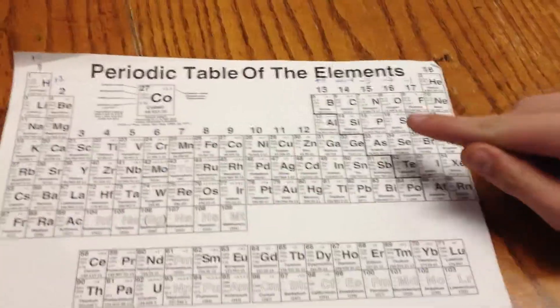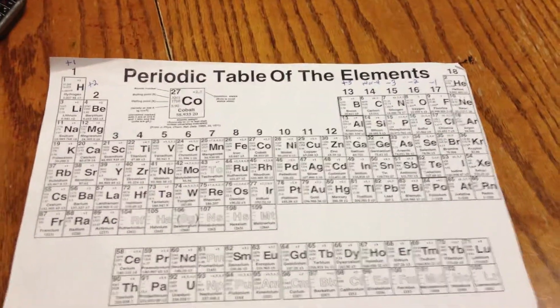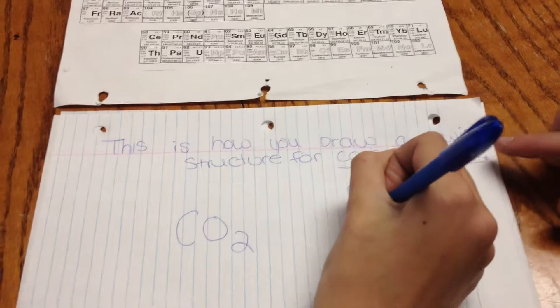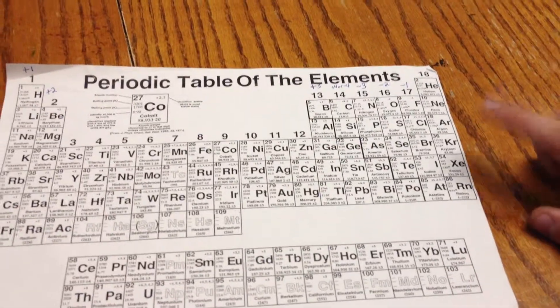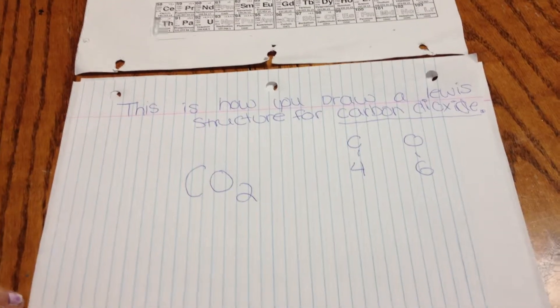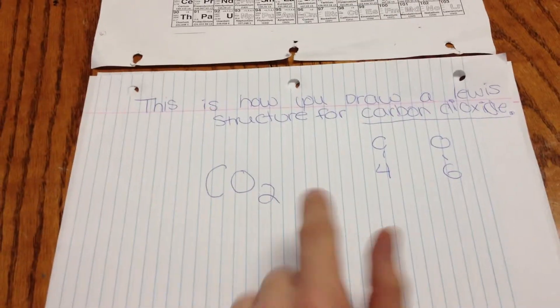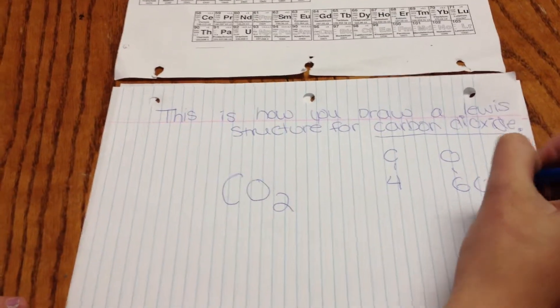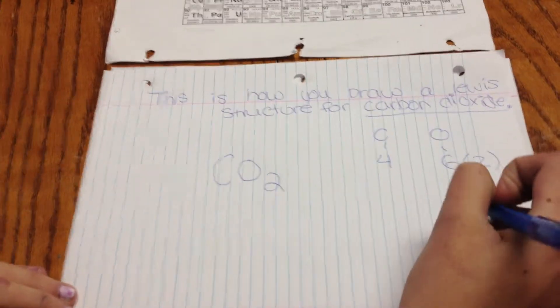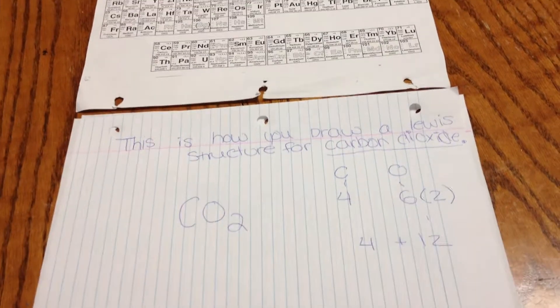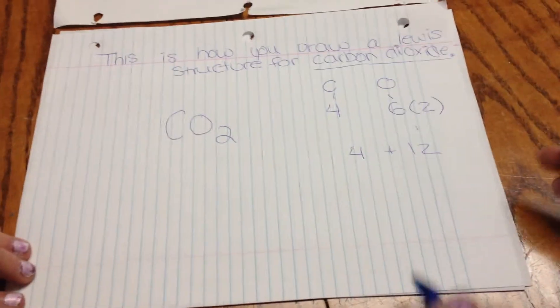So you have carbon, which if you can see is under the fourteen, which means carbon has four valence electrons. And then oxygen has six because it's under the sixteen. But then, since you have to times it by two, you would get twelve valence electrons and four for carbon, which if you add them together would equal sixteen valence electrons.